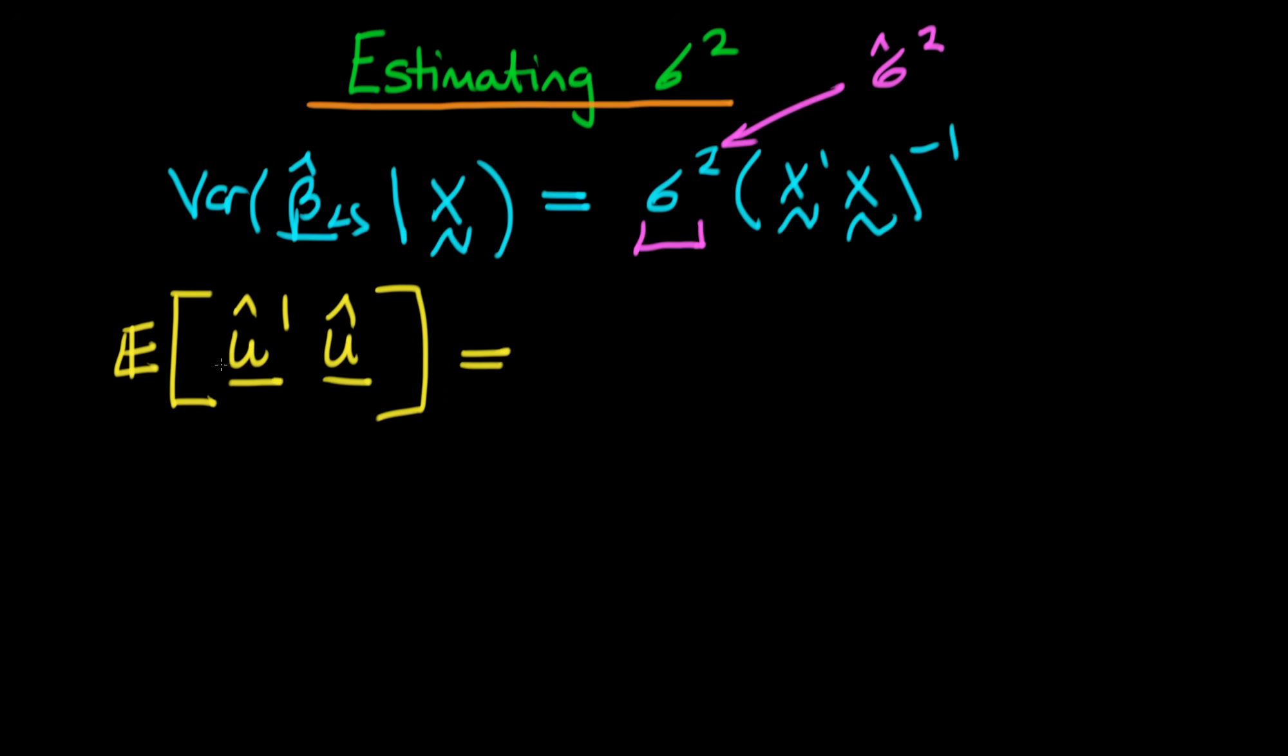then essentially what this means is, because the residuals are themselves an n by 1 vector, this u hat prime is going to be a 1 by n vector, and this is going to be an n by 1 vector, which when you multiply them together, you're going to get a 1 by 1. So you're going to get a scalar out. So that sounds about right. But what exactly are we doing here?